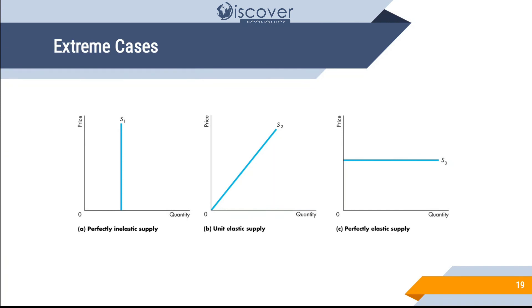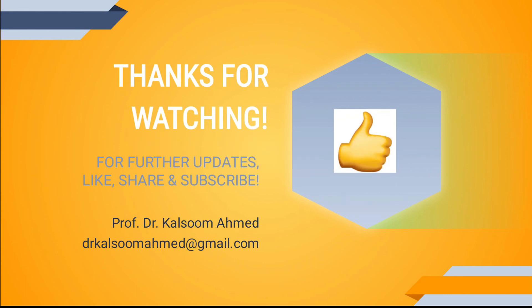In extreme cases of supply elasticity: perfectly inelastic supply means the quantity supplied cannot increase regardless of price — for example, a doctor can only perform a limited number of operations per day no matter how much the price rises. In unitary elastic supply, an equal percentage response in quantity supplied occurs with a price change. In perfectly elastic supply, the price stays the same but suppliers can offer more and more. That concludes today's lecture — if you liked the video, please like, share, and subscribe. Thank you.